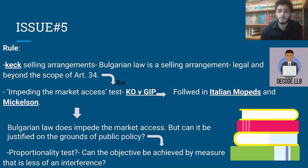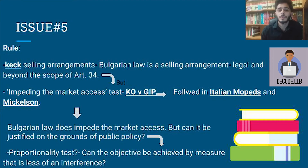Coming to the proportionality test, the approach is: can the objective be achieved by an MEQR that is less of an interference? Applying this to the situation, the Bulgarian government could have used an MEQR that was less of an interference with trade.